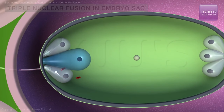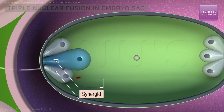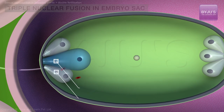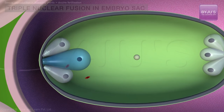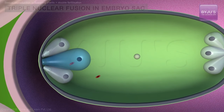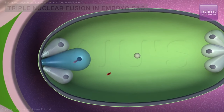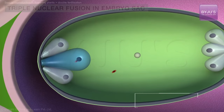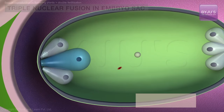Contents of the pollen tube are released in one of the synergids, and as the egg cell and synergids are in close contact, sperms do not have to travel a long distance. The sperms exhibit amoeboid movement.